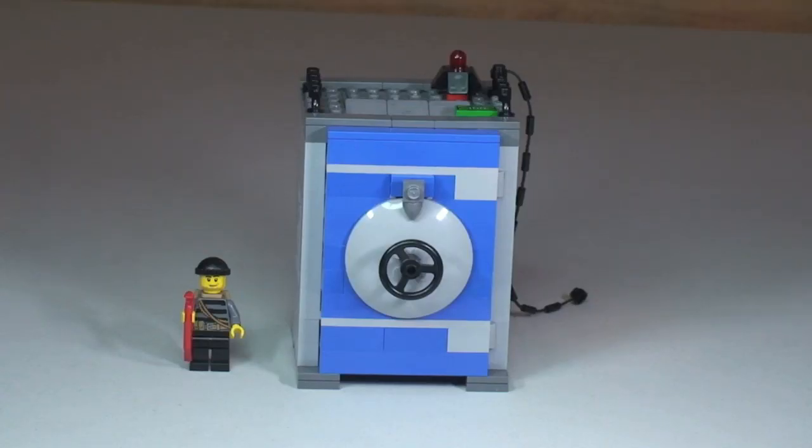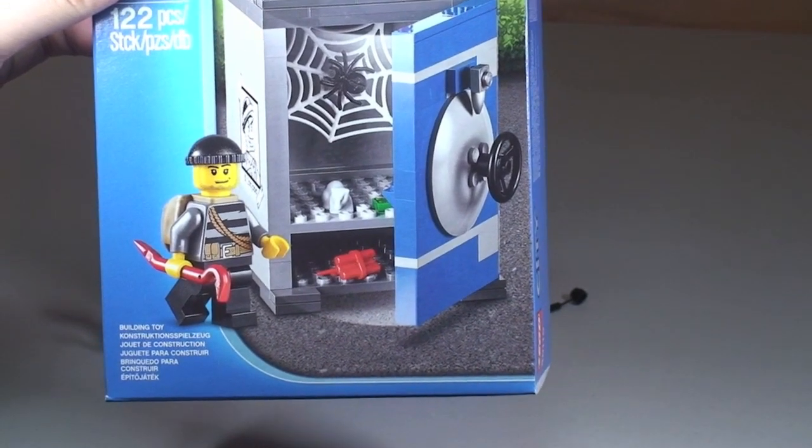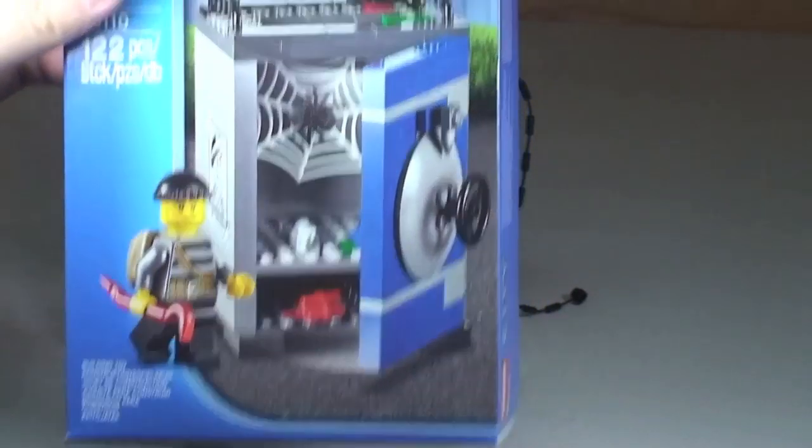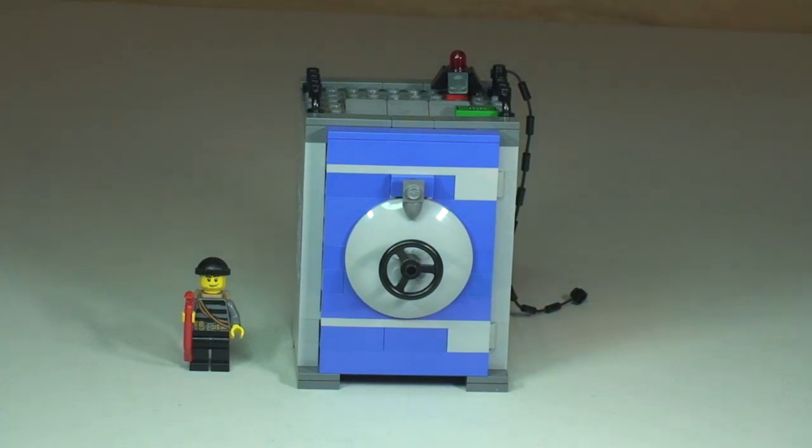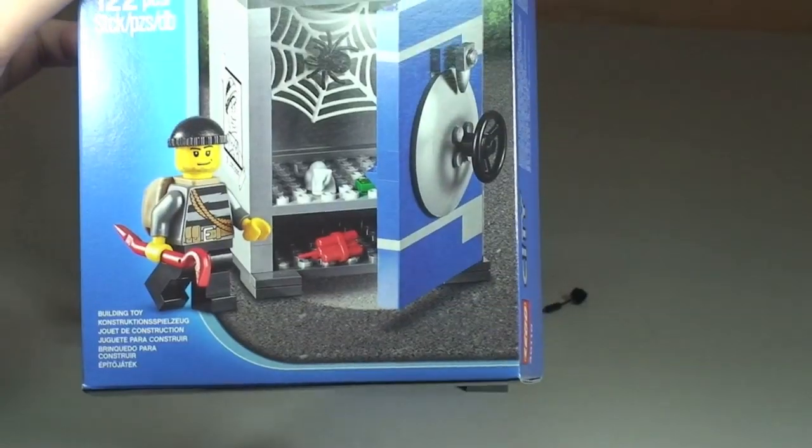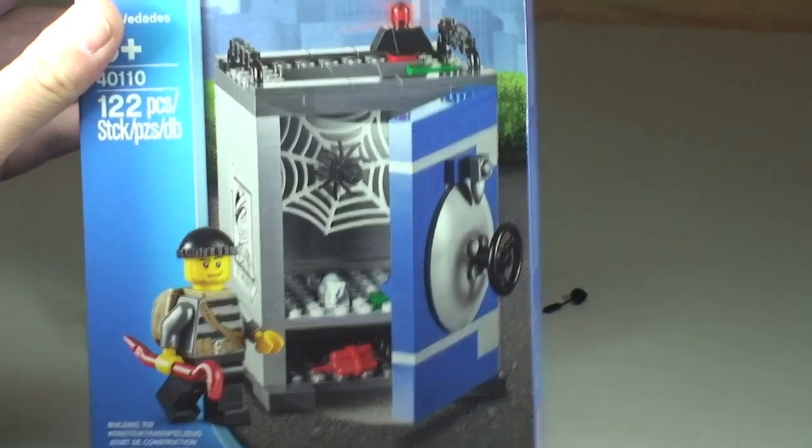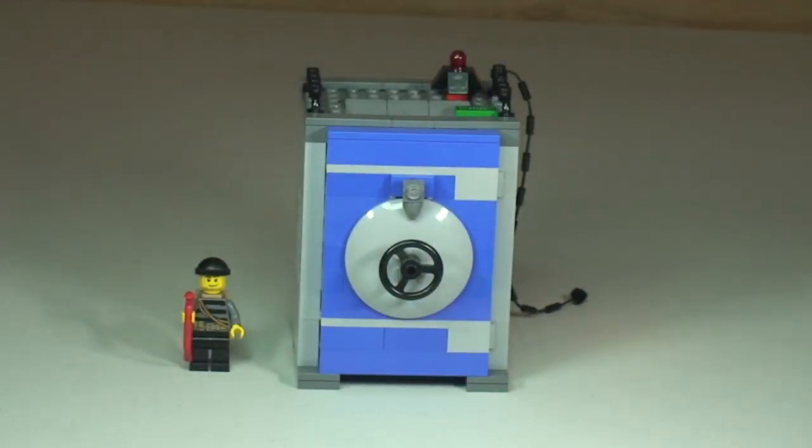Here's the first look at the LEGO City coin bank and the minifigure. One thing to say, I was surprised - it was bigger than I was expecting. Pleasantly so, I do like the size of it. When you look at the box, the scale of that minifigure standing next to the safe, the actual reality is the scale is different. You can see that minifigure looks considerably smaller next to the safe. But that was quite a pleasant surprise.